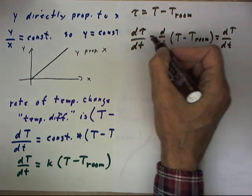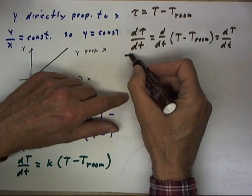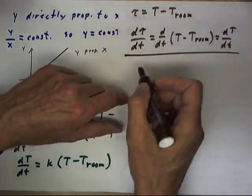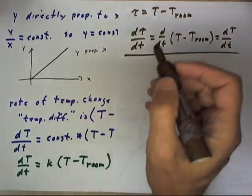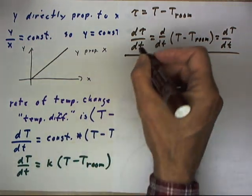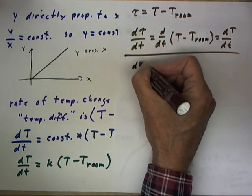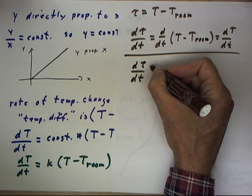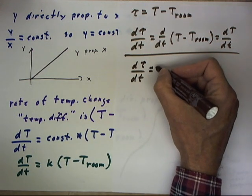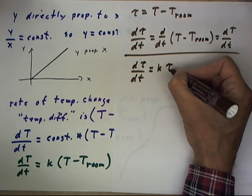In other words, tau changes at the same rate that T does, and that makes perfect sense if you think about it. This means that we can translate the equation and the equation becomes d tau dt equals k times tau.